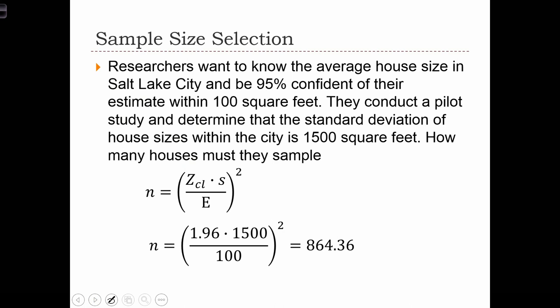Let's look at an example. Researchers want to know the average house size in Salt Lake City. They want to be 95% confident about their estimate, and they want their estimate to be within 100 square feet. So the margin of error in this case is 100 square feet. The confidence level is 95%. They go out and conduct a pilot study, and in that pilot study, they found that the standard deviation of the house size was 1,500 square feet. In this case, how many houses must they sample?